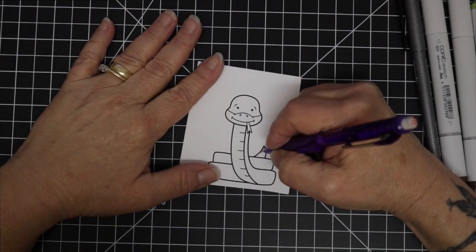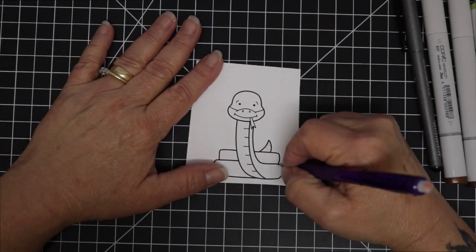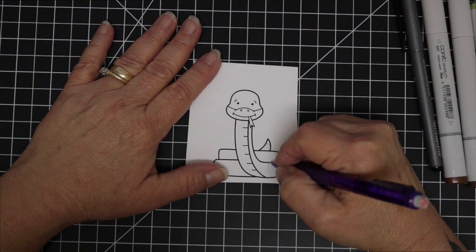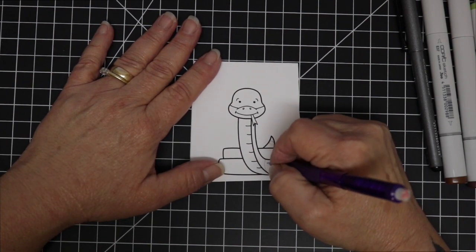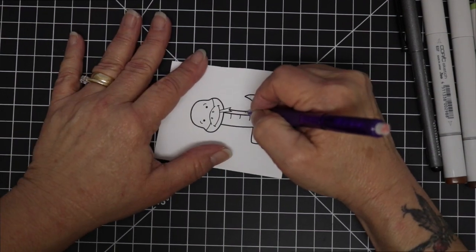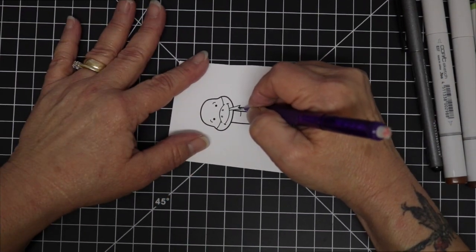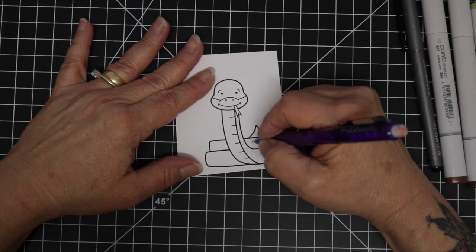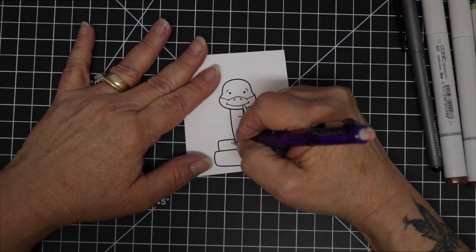Hi everyone, it's Sheri and I'm here again today with another digital stamp from Just Crafts Digitals and this is Sassy Snake. I printed Sassy Snake out on some Neenah Solar White 80 pound cardstock just using my regular inkjet printer.